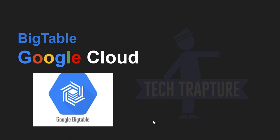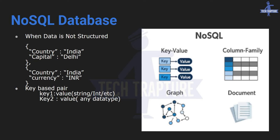First, let's look at what NoSQL databases are — where data is not structured. For example, in a relational database we have a table with a defined column set. But with unstructured data, the first record might contain values for country and capital, while the second record contains country and currency with no capital column. So data can be in key-value pairs, column families, graph data, or document data.